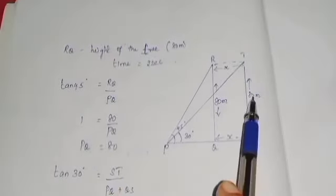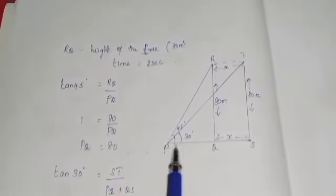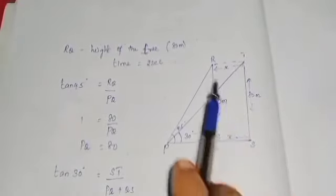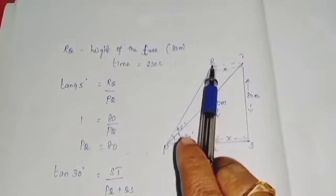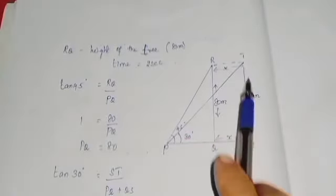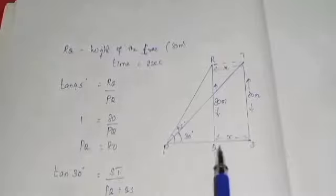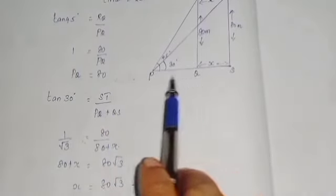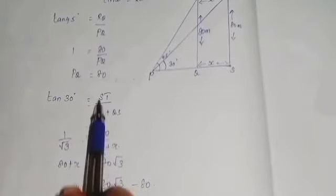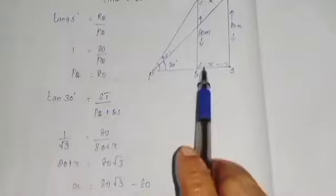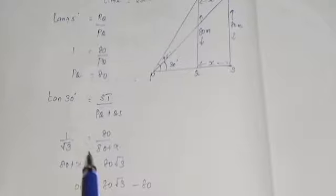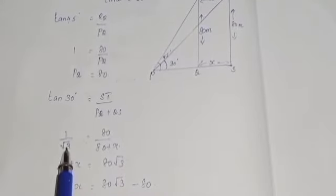Next, we have triangle PST. Using tan 30 degrees, opposite side by adjacent side. ST by PS, where ST is 80 meters (same height). PS is the full horizontal distance, which is PQ plus QS. So tan 30 equals 80 divided by PQ plus QS. That is 1 by root 3 equals 80 by 80 plus x.